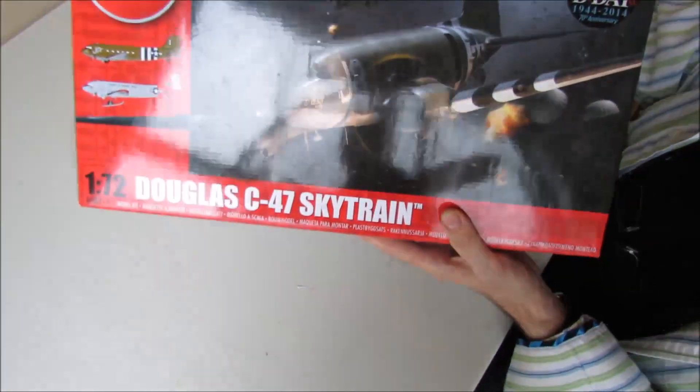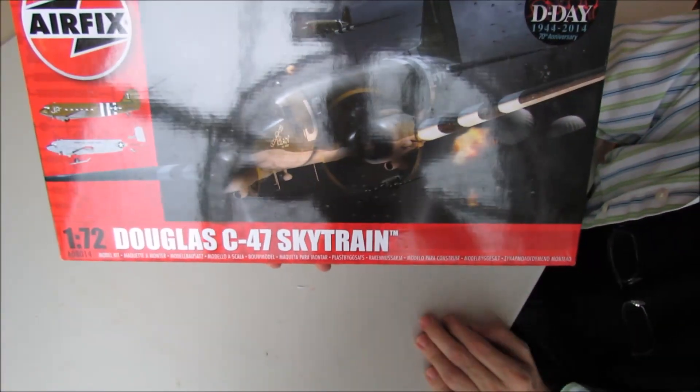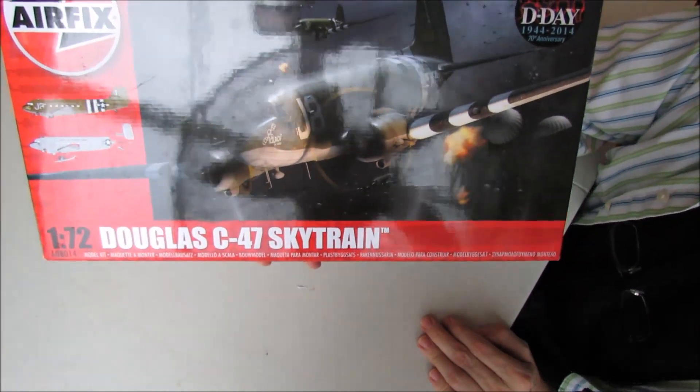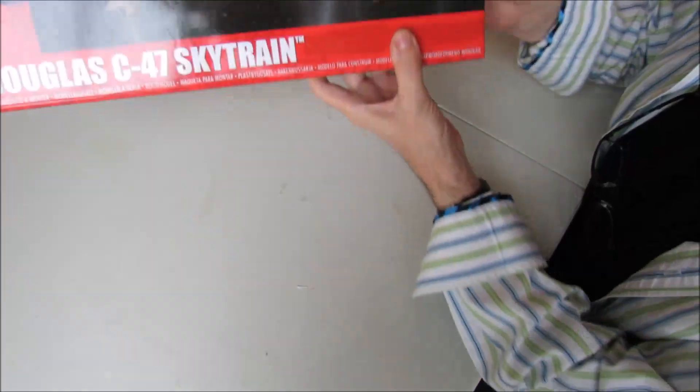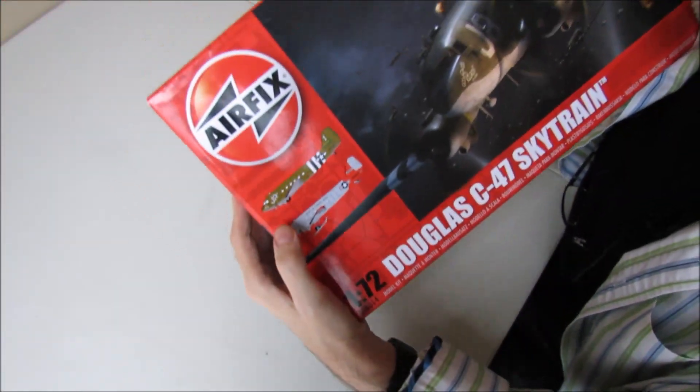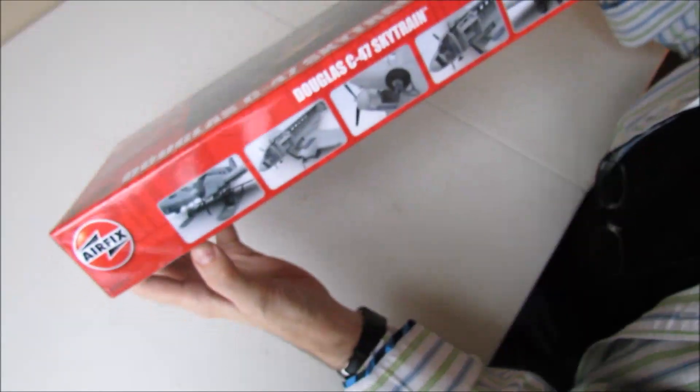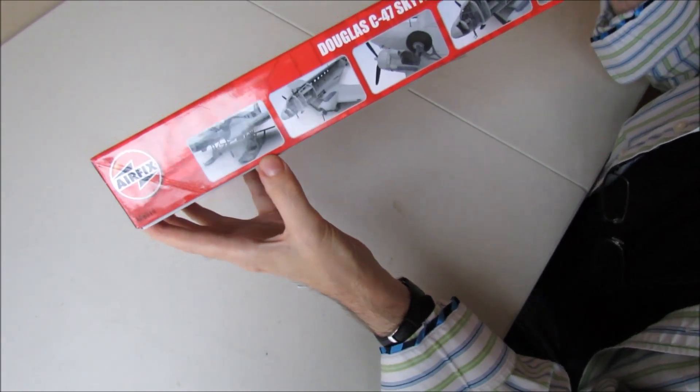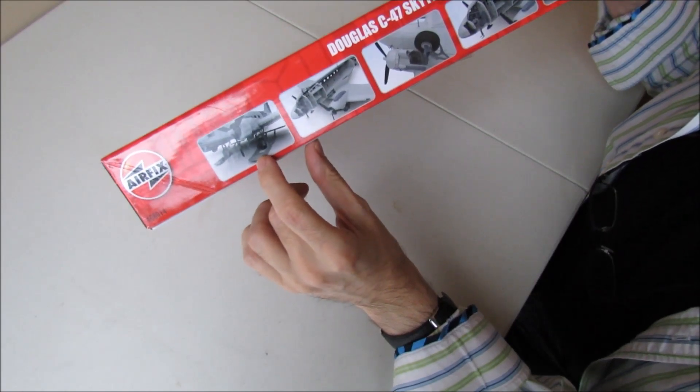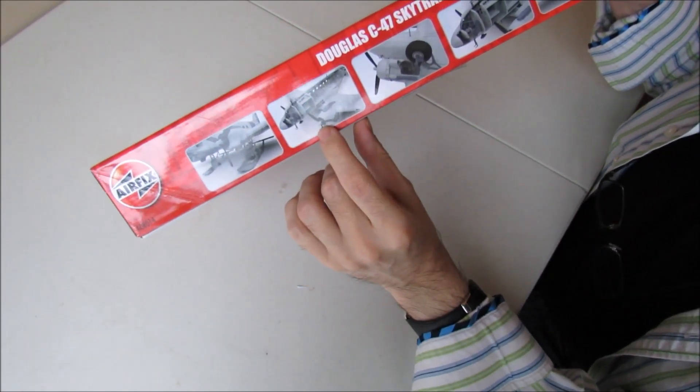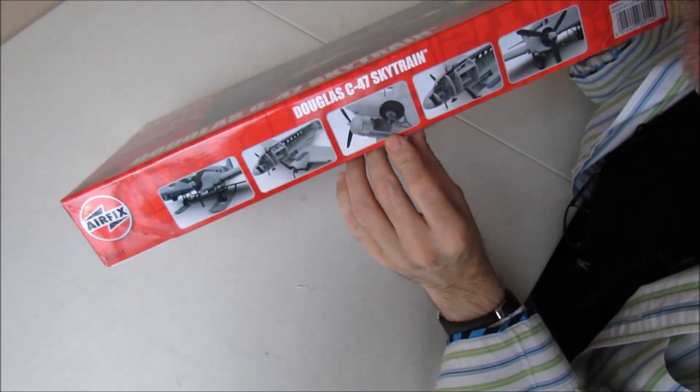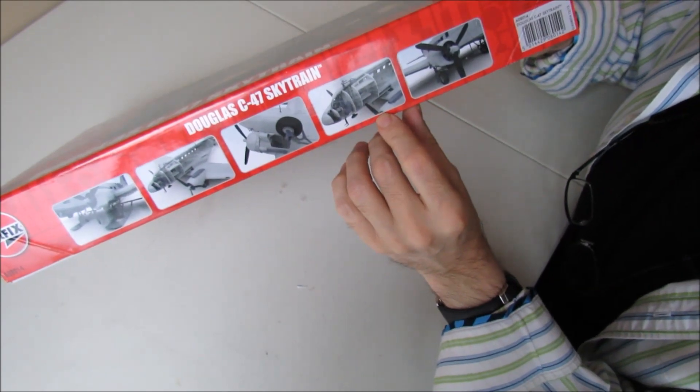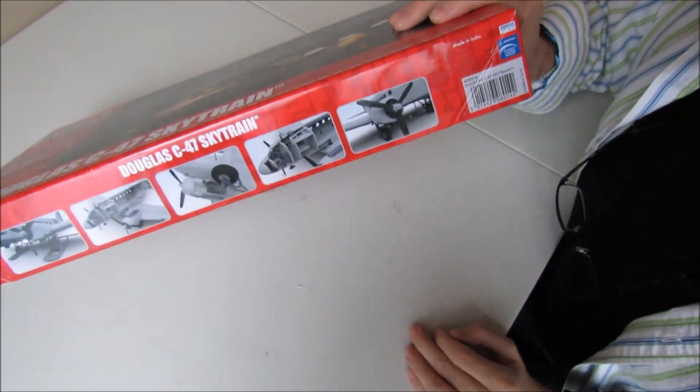Let's make a start. Box art is great, shows C-47s flying over France with the paratroopers dropping out on D-Day. It's offering two versions as you can see there. Box art around the sides showing 3D images from CAD or actual models that have been built up. That's showing one version with skis on, showing a section through the fuselage, showing the undercarriage and a close-up of the propeller engine cowling assembly.